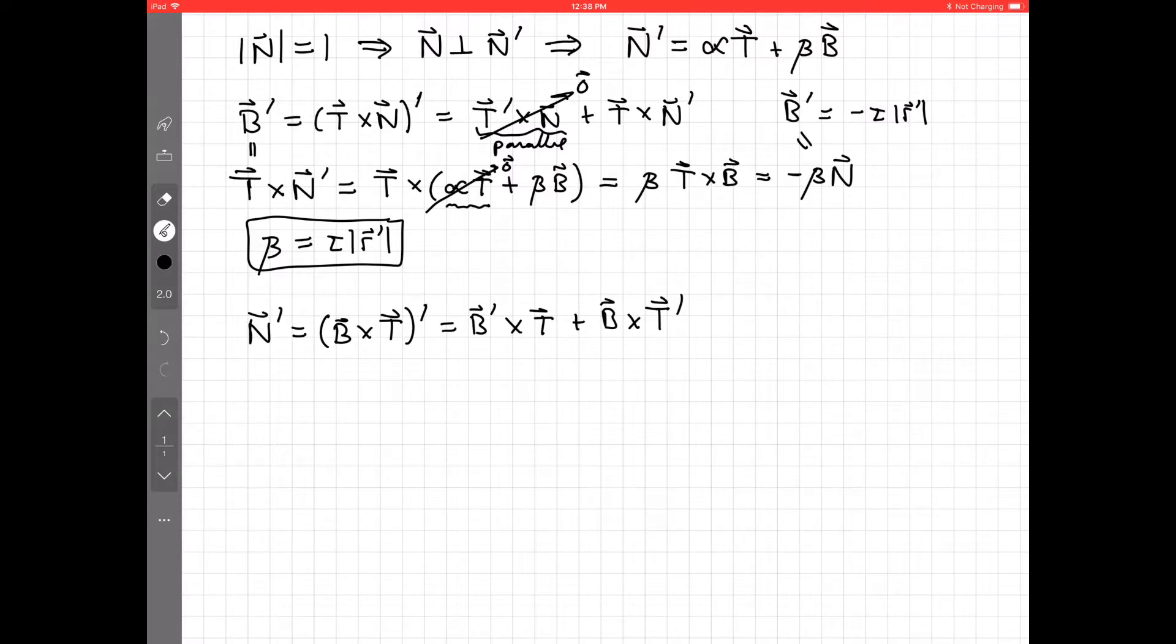And, well, we already know what b' is minus tau times the speed times n. So that'd be cross t. So we just replaced what b' is.